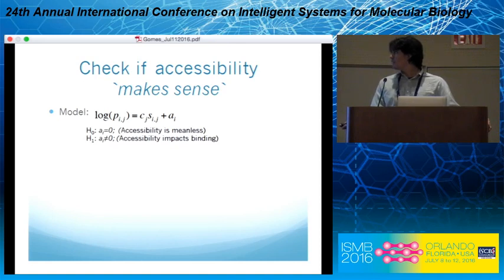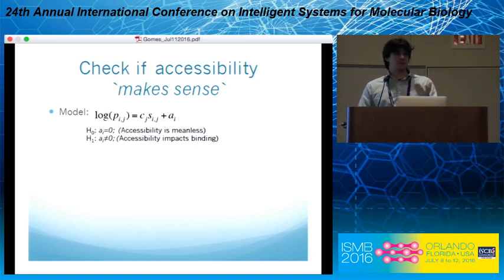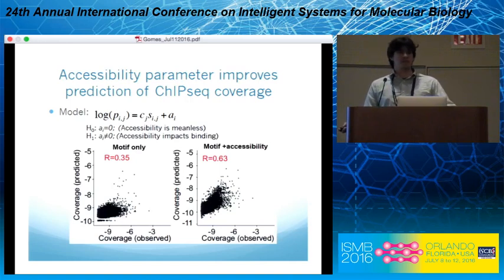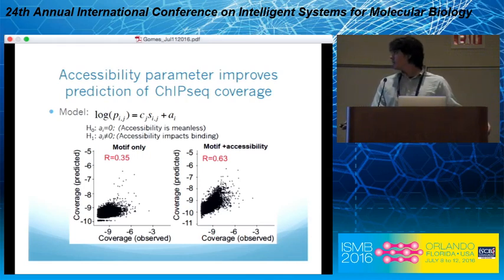The rationale is very simple: if the accessibility parameters make sense, the parameter will be different from zero — if it doesn't help to inform the data, the parameter will be equal to zero. We can test that in the data. On the x-axis here is the coverage observed in the ChIP-seq data, and the y-axis is the coverage predicted if you use only the motif — which would be based on affinity alone. And when we actually include the accessibility parameter, the correlation improves significantly.